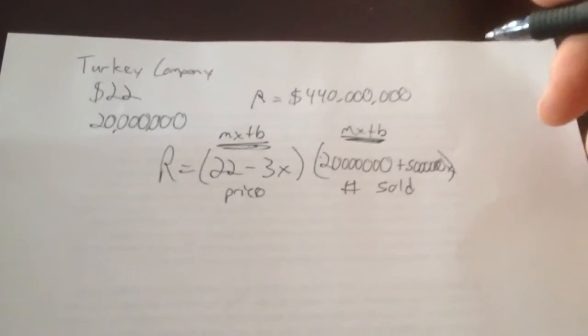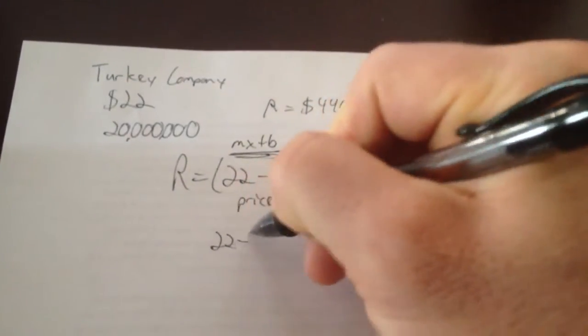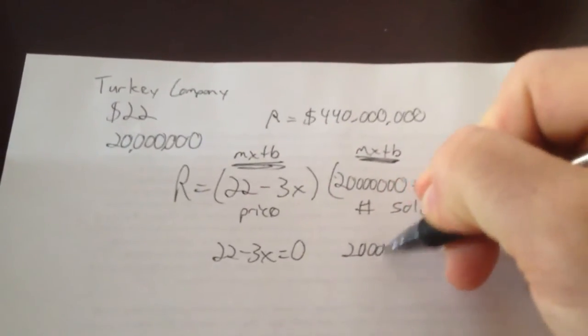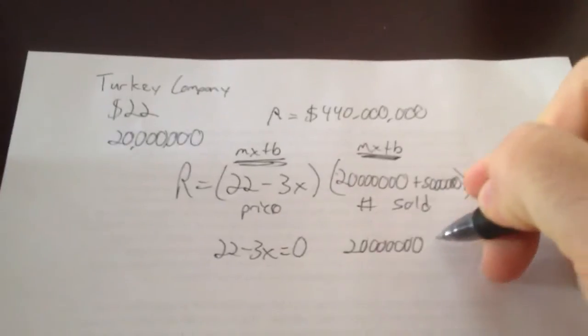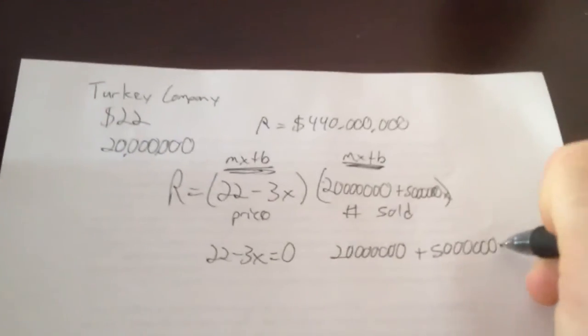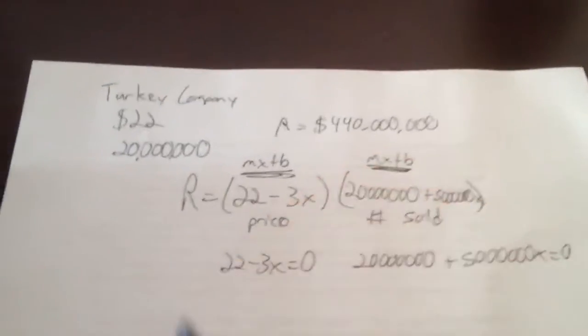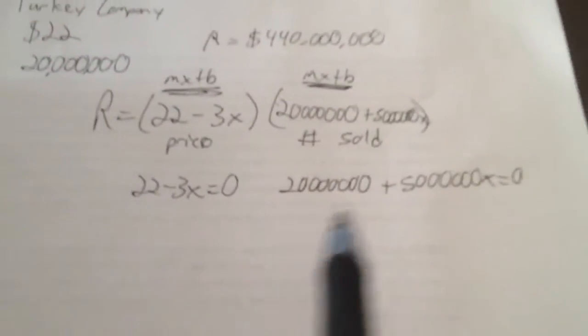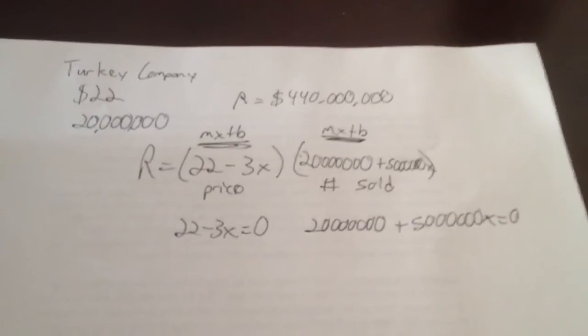In this problem, what you do is you take each one of these parentheses and you set them equal to 0. Basically what we're doing is like what we did when we were solving a quadratic equation by factoring. The difference here is I'm finding when the revenue equals 0. Because if I can find when the revenue equals 0, the vertex or the maximum point is going to be right in the middle of those two.